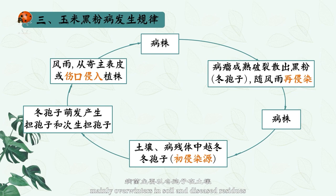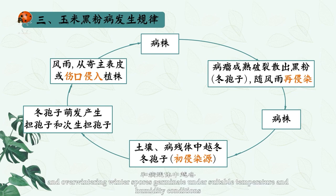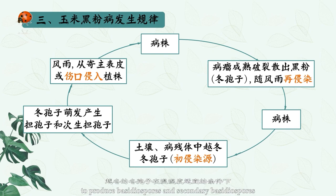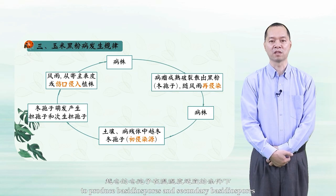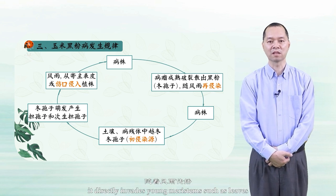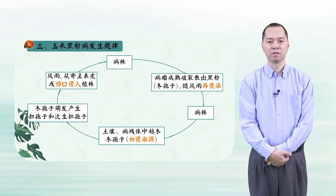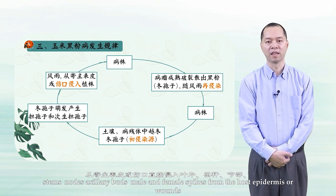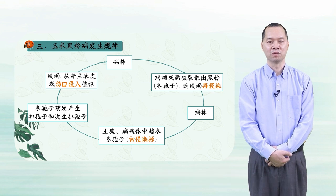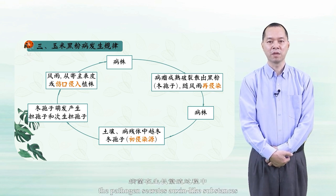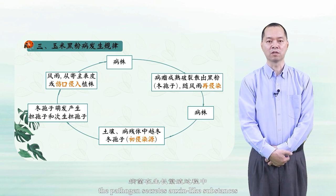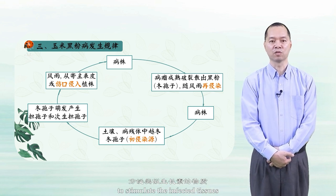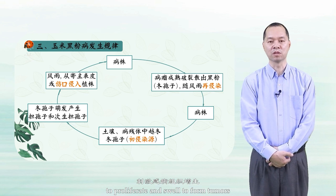The pathogen mainly overwinters in soil and diseased residues. Overwintering winter spores germinate under suitable temperature and humidity conditions to produce basidiospores and secondary basidiospores. With the spread of wind and rain, the pathogen directly invades young meristems such as leaves, stems, nodes, auxiliary buds, and male and female spikes through the host epidermis or wounds. During growth and reproduction, the pathogen secretes auxin-like substances to stimulate the infected tissues to proliferate and swell, forming tumors.